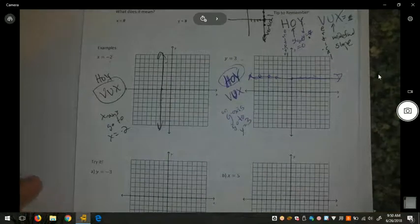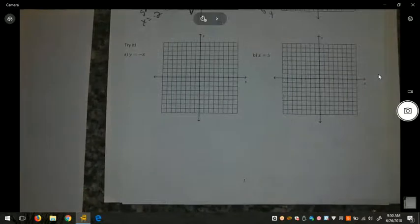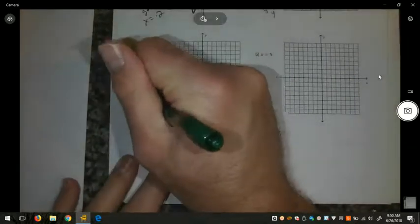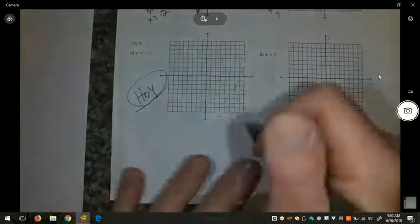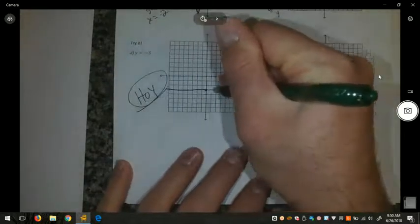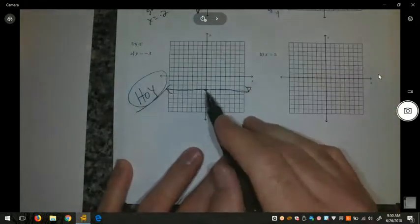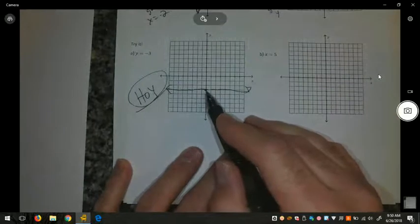Please pause the video and take a moment to try the next two problems. For try it A, if you did this correctly, you used oi. y equals. Since y equals negative 3, we do a horizontal line through negative 3 on the y-axis.